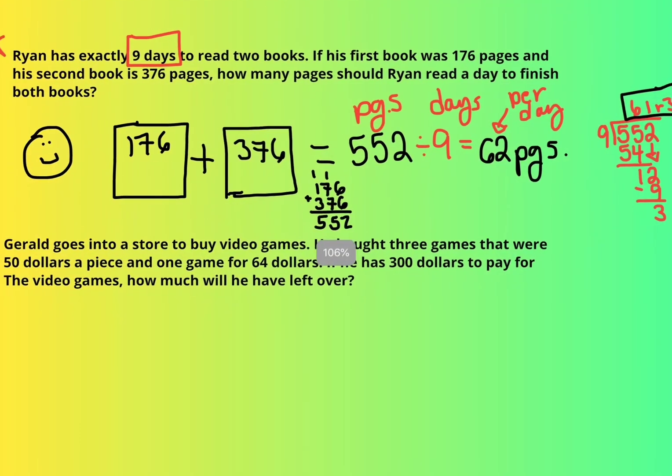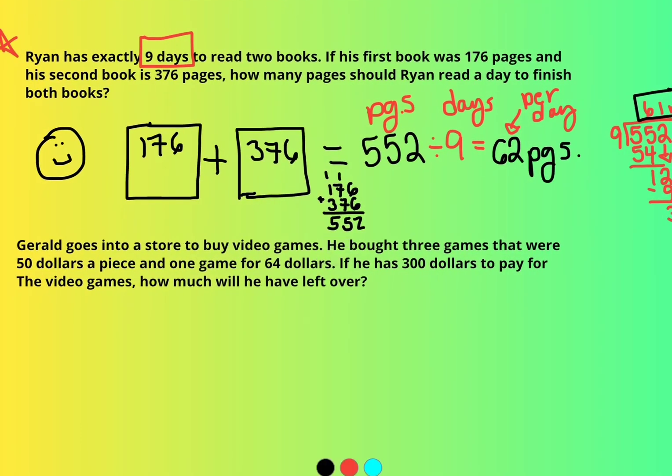Now, this one. Gerald goes into a store to buy video games. Gerald's happy. He's buying video games. He bought three games that were $50 apiece. So he has this game, this game, and this game. And they were all $50 apiece. I could do the quick addition and say, okay, on these games, he spent $150.